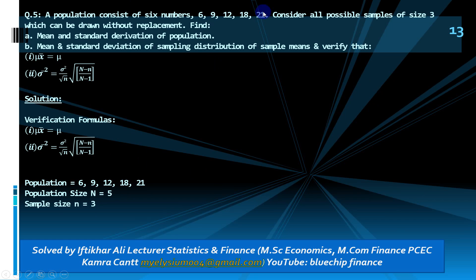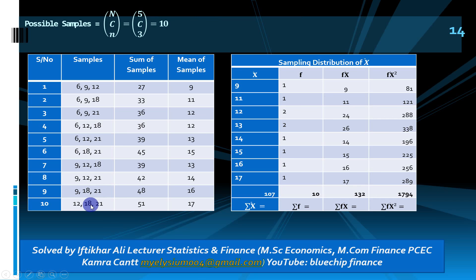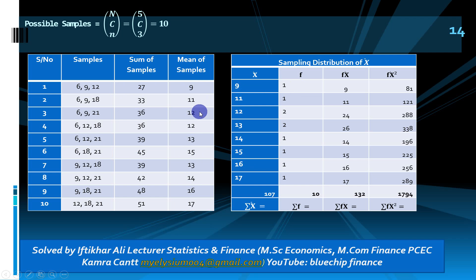After listing all 10 samples, we find the sum and mean of each. For example, (6,9,12) gives sum = 27, mean = 9; (6,9,18) gives sum = 33, mean = 11, and so on. We then list the distinct mean values — 9, 11, 12, 13, 14, 15, 16, 17 — and place the relevant frequency for each. For example, mean 9 appeared once, mean 12 appeared twice. Then compute fx̄ and fx̄² and find their sums: 132 and 1794.